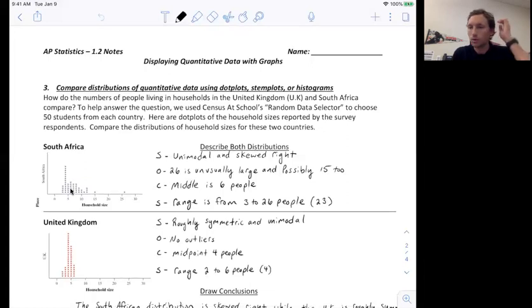So the middle is important, or the center is important because it tells you the typical household size. So typically their household size is around six in South Africa. Then finally, the range goes from three up to 26 people. So it has a range of 23, but it goes from the minimum to the maximum.